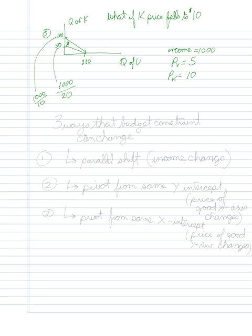So there have been basically three ways that the budget constraint can change. You can have a parallel shift - that would be whenever the income is changing. And I drew it as if income were increasing, but I could have also drawn it as if income was decreasing.